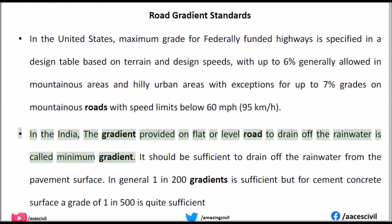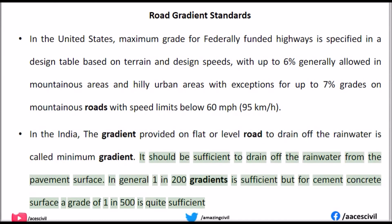In India, the gradient provided on a flat or level road to drain off rainwater is called the minimum gradient. It should be sufficient to drain off rainwater from the pavement surface. In general, a 1 in 200 gradient is sufficient, but for cement concrete surfaces, a grade of 1 in 500 is quite sufficient.